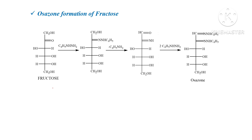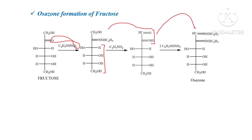Next is osazone formation. For osazone formation, fructose reacts with phenyl hydrazine — one sugar molecule reacts with three molecules of phenyl hydrazine. The first reaction occurs at the carbonyl group, forming a hydrazone derivative upon loss of water. Upon Amadori rearrangement, a C=O and C=NH are formed. Both functional groups then react with phenyl hydrazine to give the final osazone product.